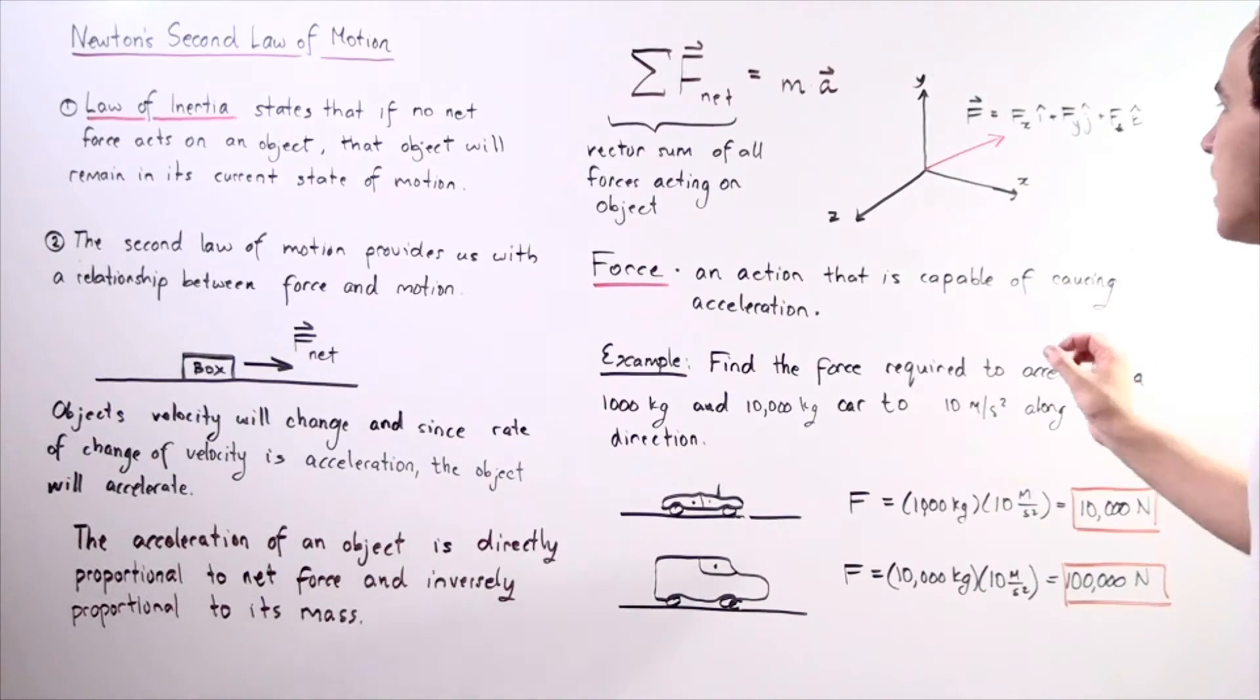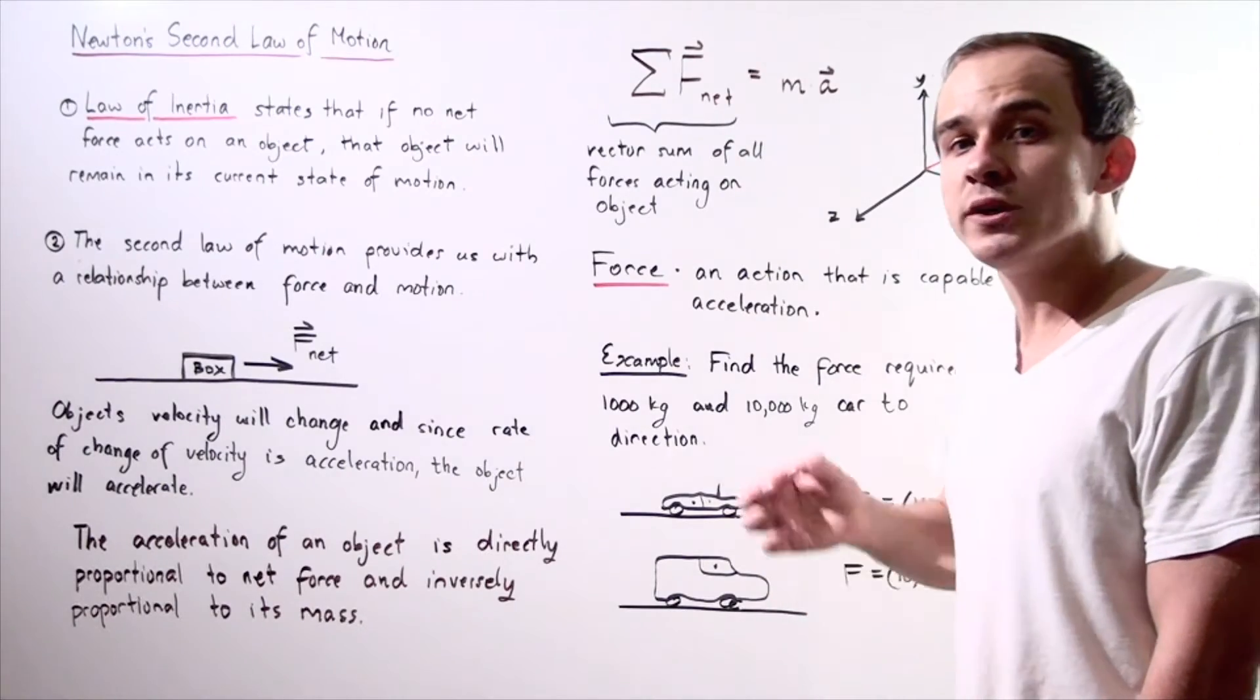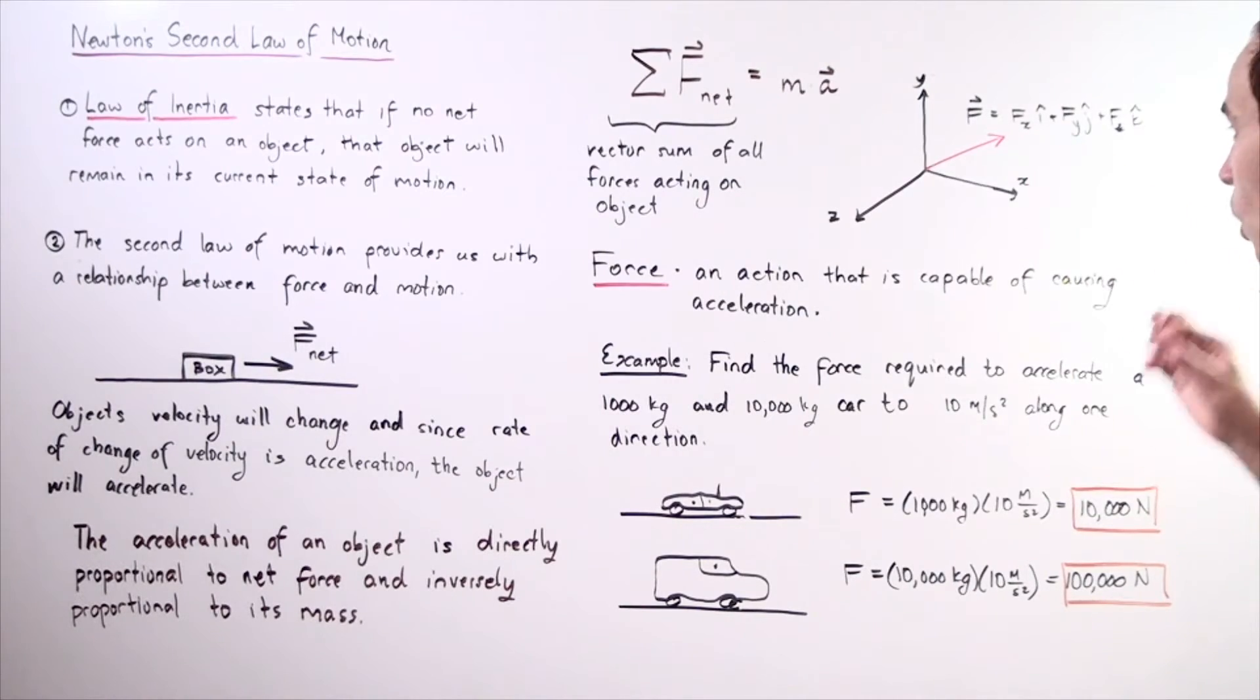For example, if we have a three-dimensional vector, recall that this three-dimensional vector can be broken down into three different components. We have the Fx, the component along the x-axis, one component along the y-axis, and the third component is along the z-axis.